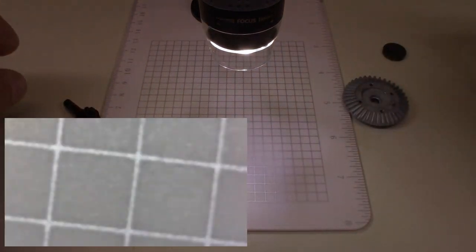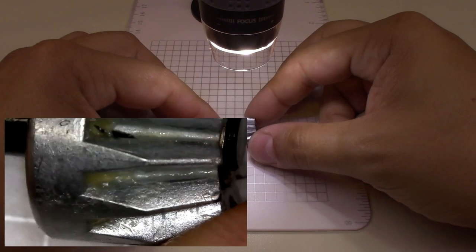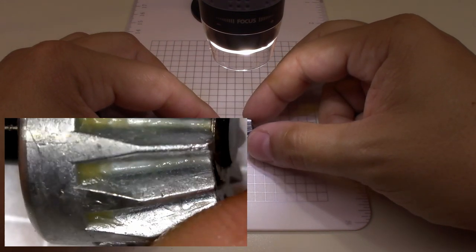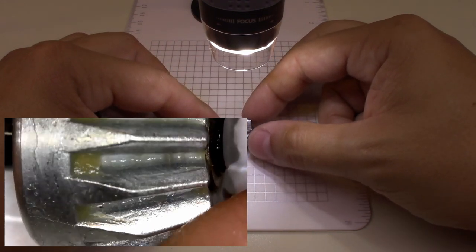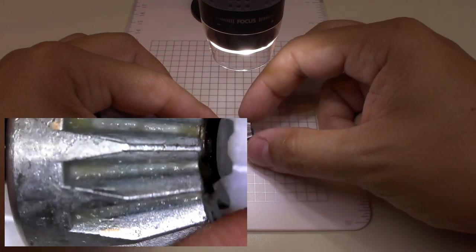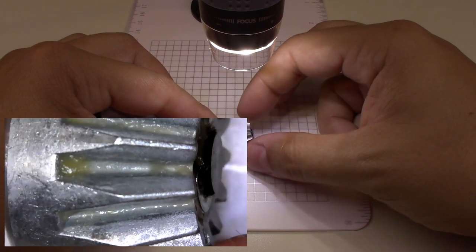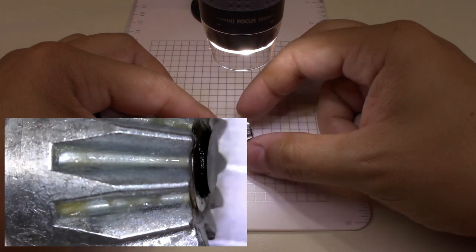We'll look at the pinion as well. I didn't clean the grease off this but once again a cast part. Pretty ugly stuff. And like I said, these do not last very long. I honestly think that a plastic gear would last longer.